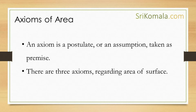First, before we prove the area of a square, we need to know the axioms of area. An axiom is a postulate or an assumption taken as premise. There are 3 axioms regarding the area of a surface or shape.